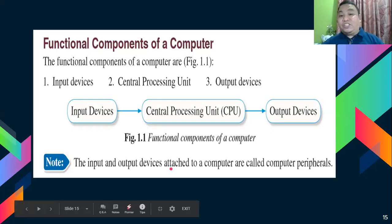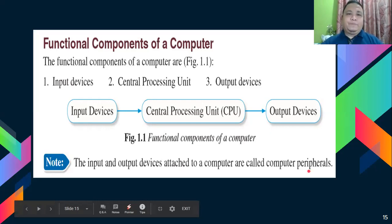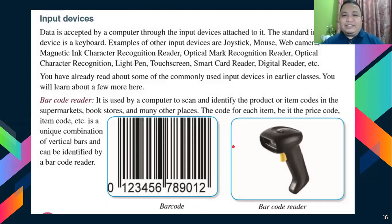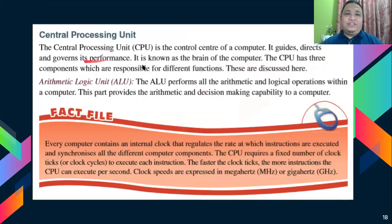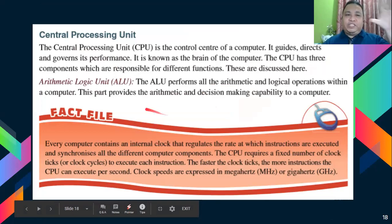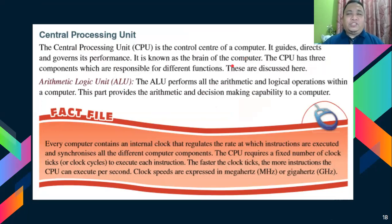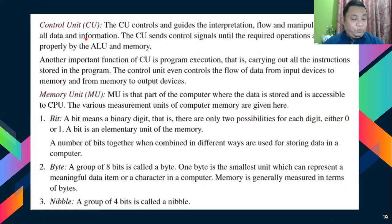The input and output devices attached to a computer are called computer peripherals. Examples of input devices include barcodes used in computer stores, and magnetic ink character recognition (MICR) readers, and optical mark recognition (OMR) readers. The central processing unit is composed of the ALU — arithmetic logic unit — which performs all arithmetic and logic operations. Under the CPU, aside from ALU, we also have CU — the control unit — which controls and guides the processing of data and information.